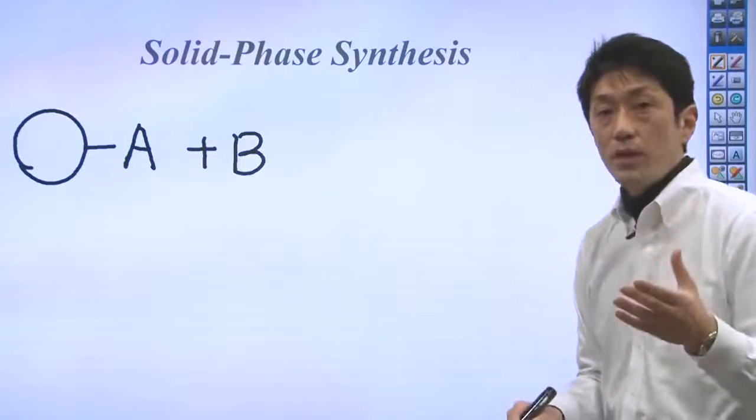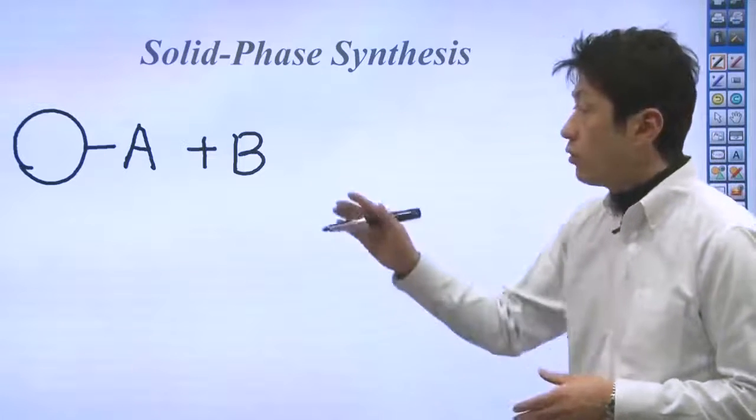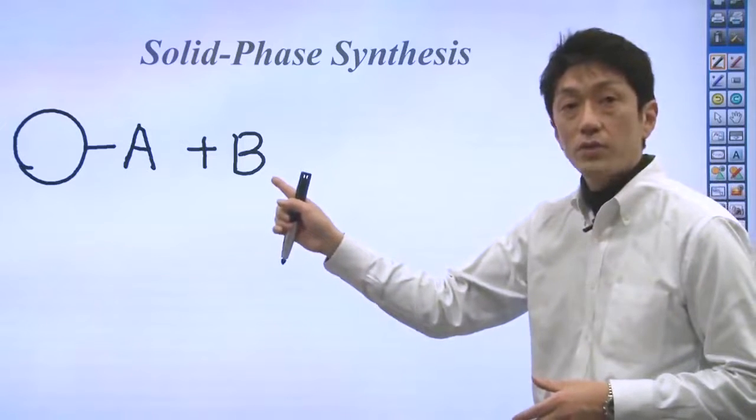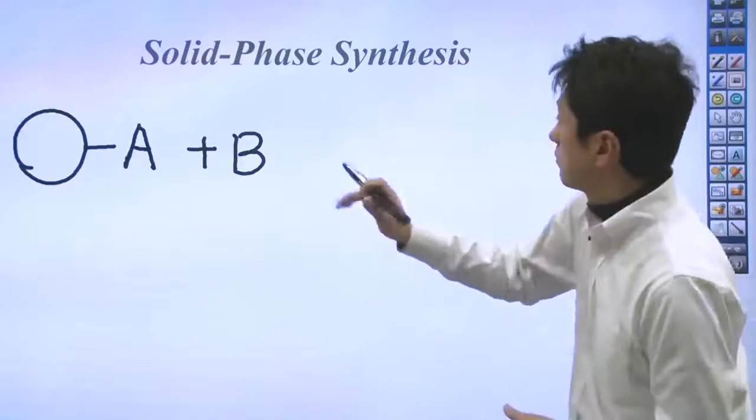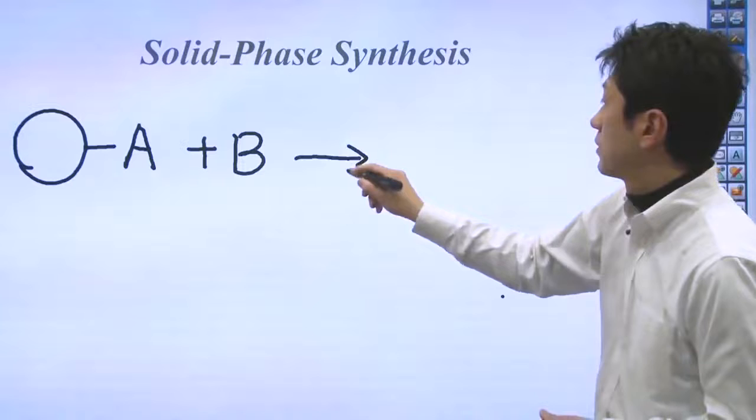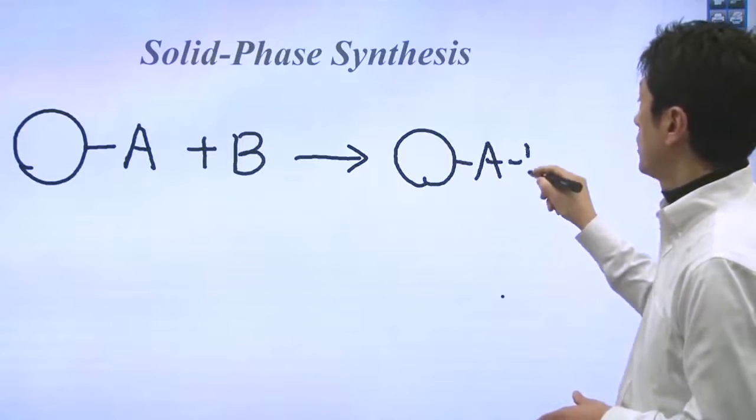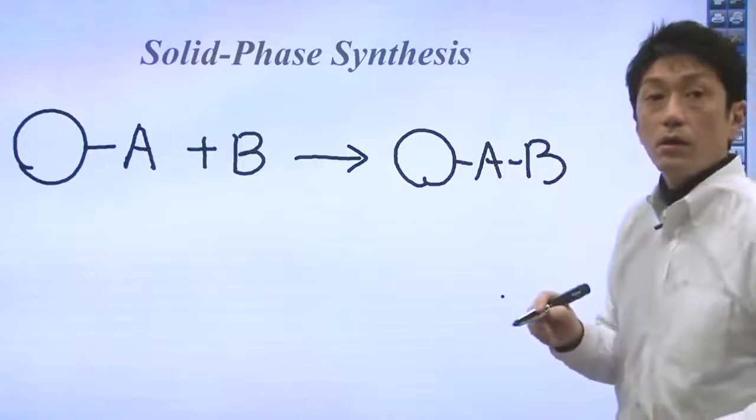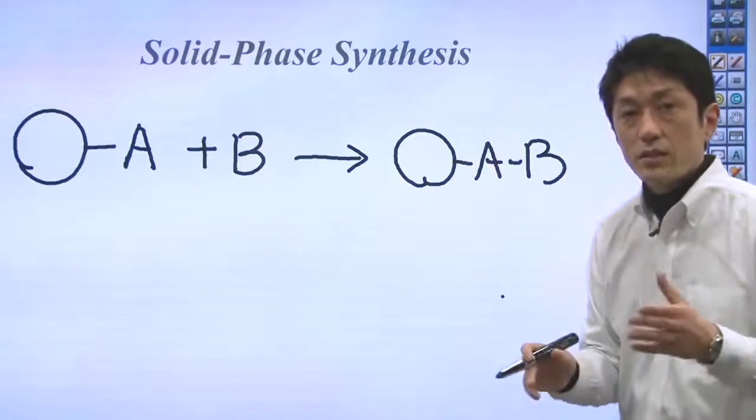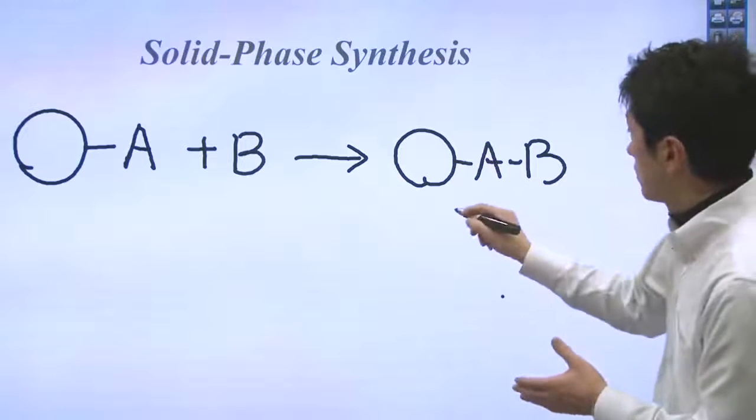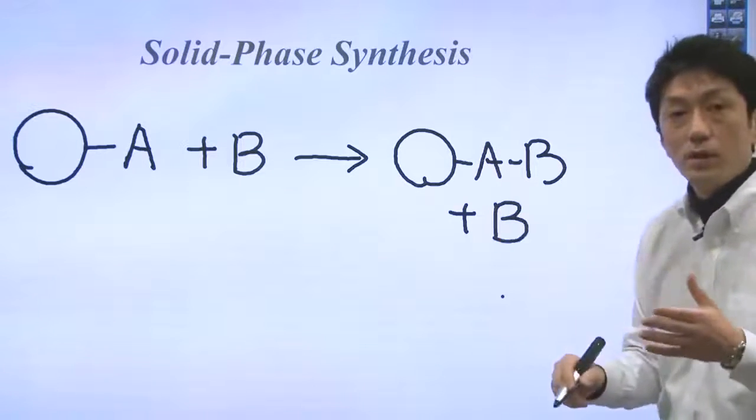When B is added in large quantities, almost 100 percent of A will be reacted with B, producing AB on the large beads. In this case, excess B should be there, which can be rinsed out.